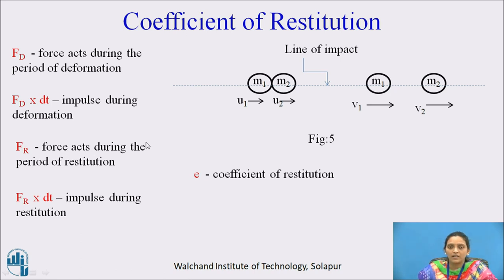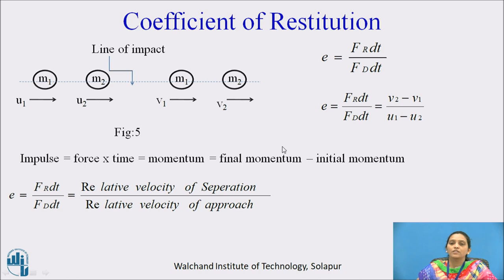After deformation, the body overcomes the deformation and the bodies separate. This period is called the period of restitution. The force acting during restitution is Fr, so the impulse during restitution is Fr·dt. The coefficient of restitution, e, is defined as the ratio of the impulse during the period of restitution to the impulse during the period of deformation.